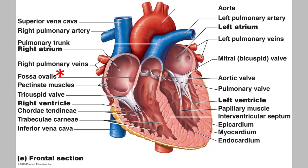The other two valves are located where blood exits the ventricles into the arteries. On the right side, between the right ventricle and the pulmonary trunk, is the pulmonary semilunar valve, usually just called the pulmonary valve. On the left side, between the left ventricle and the aorta, is the aortic semilunar valve, usually just called the aortic valve.